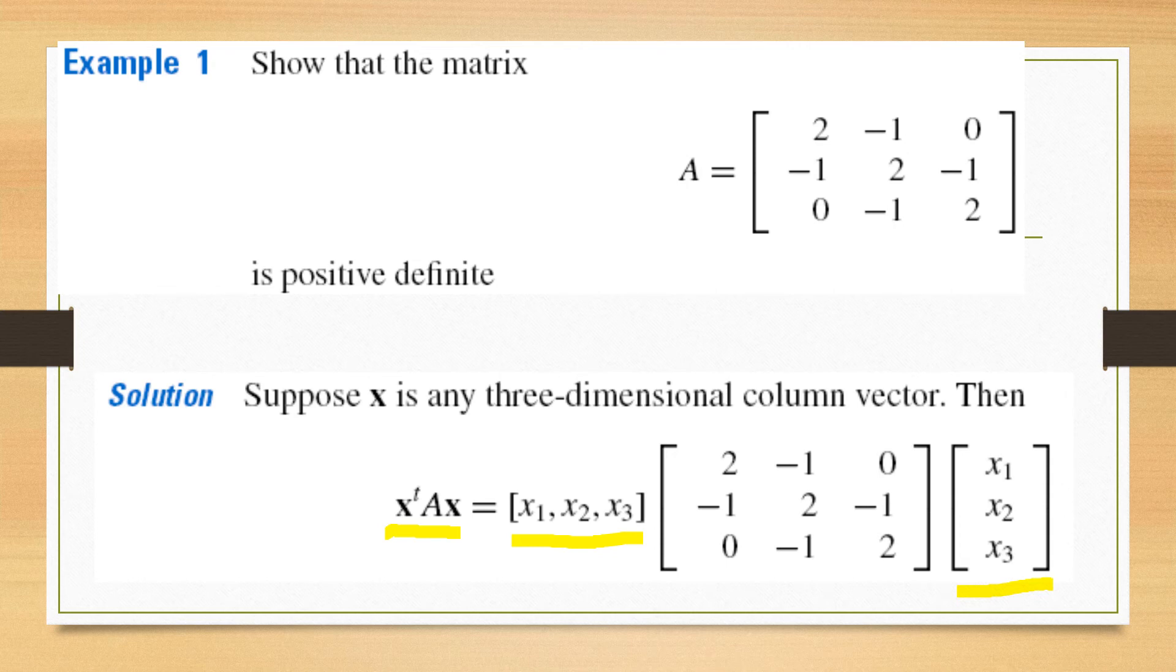We know how we have to multiply these three matrices. We will first take the result of the product of these two matrices: this matrix and this vector.